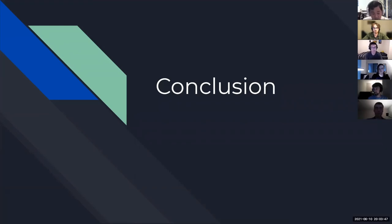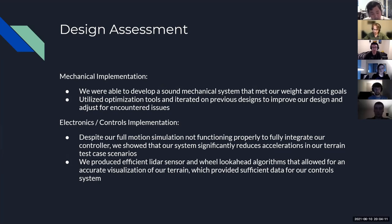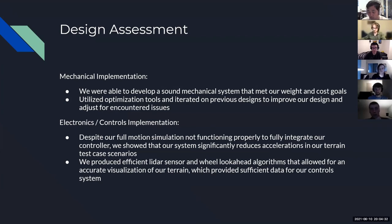In conclusion, for our mechanical implementation, we developed a sound mechanical system that met our weight and cost requirements, the 24-inch travel, and the ability to travel over specified terrain and achieve the target accelerations. We utilized optimization tools and iterated on previous designs. On the electronics and control side, although we were not able to implement a full motion simulation, we showed in our pipeline that we could significantly reduce accelerations in the critical range, created LiDAR terrain mapping and wheel speed lookahead algorithms that accurately predict vehicle path, and provided sufficient data for the control system to dramatically decrease acceleration.